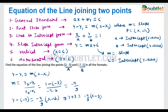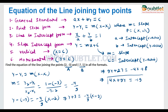Cross-multiplying 9 to the left-hand side gives 9y plus 27 equals minus 4x plus 8. Writing this in general standard form: 4x plus 9y equals minus 19. This is the equation of the line passing through (2, minus 3) and (minus 7, 1) in general standard form.